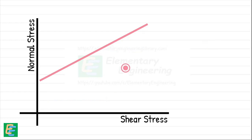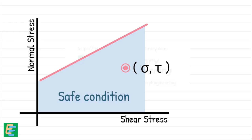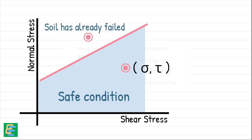Any point representing a combination of normal stress and shear stress that lies below the failure envelope indicates a safe condition for the soil. On the other hand, any point above this line represents a condition where the soil has already failed.